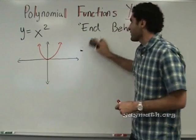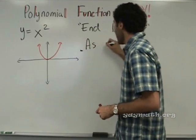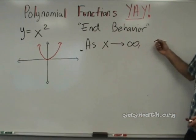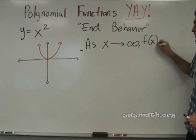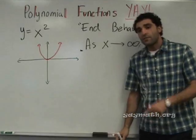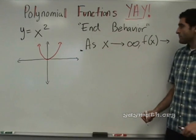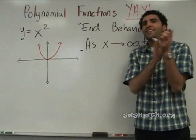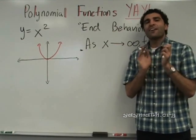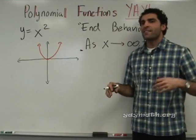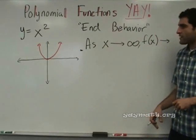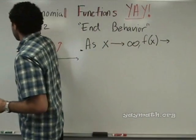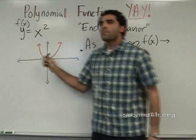End behavior always begins with the following phrase: as x approaches infinity. F of x — remember, f of x is another way of saying y. So when we say f of x, we're thinking y. Focus on the red. Do you agree that as we progress up this parabola — this point, and this point, and this point — x is getting larger and larger? X is getting larger, thus x is going towards infinity.